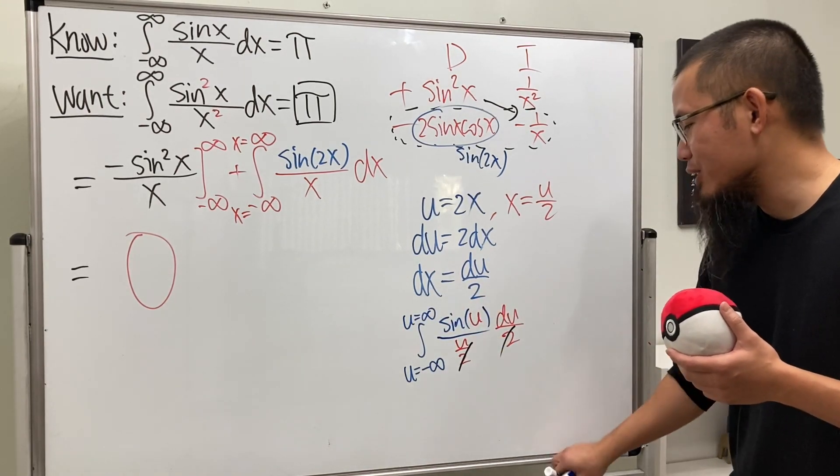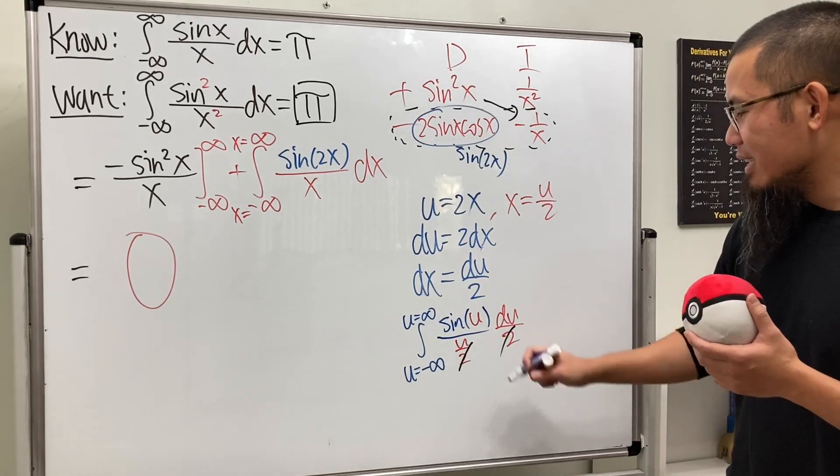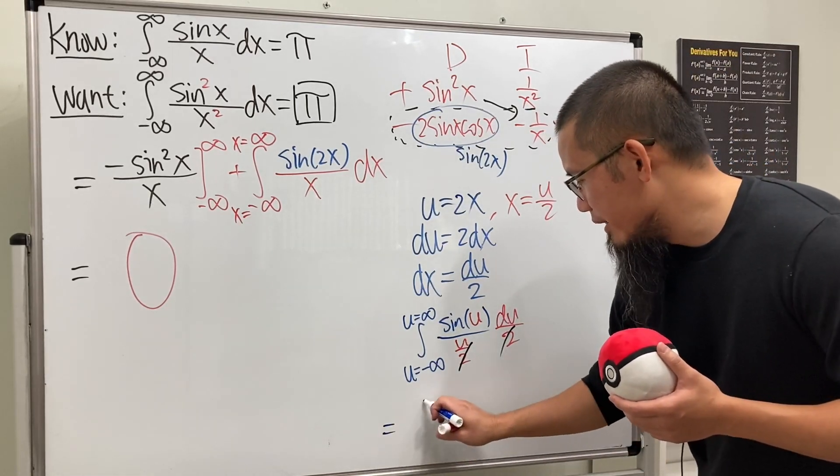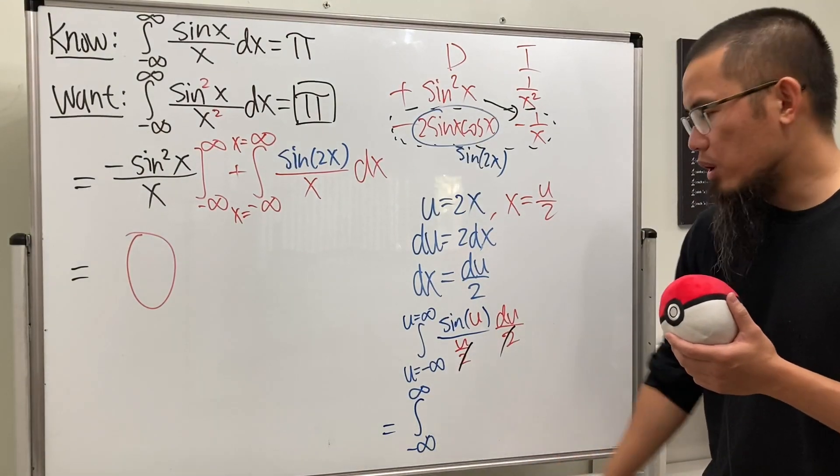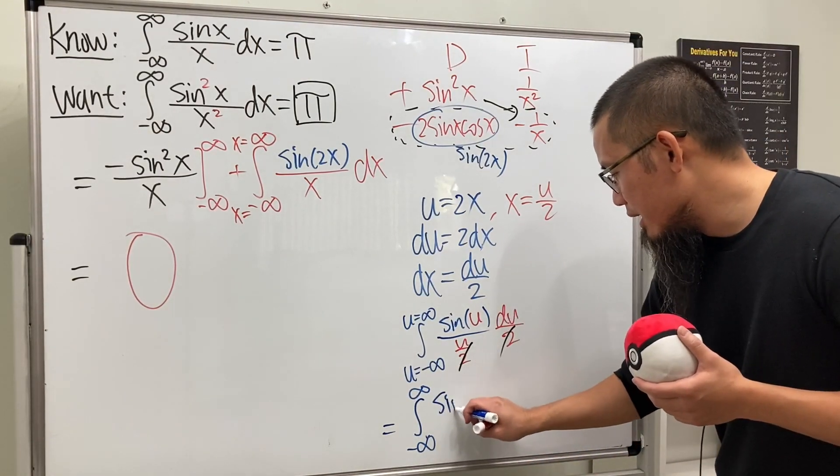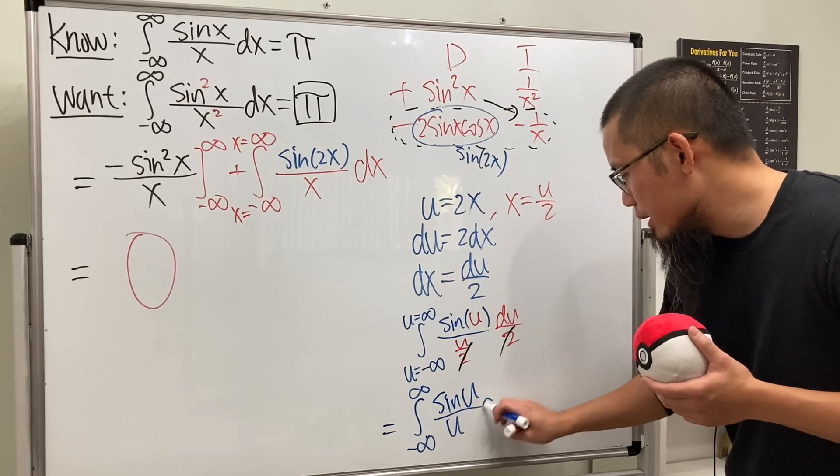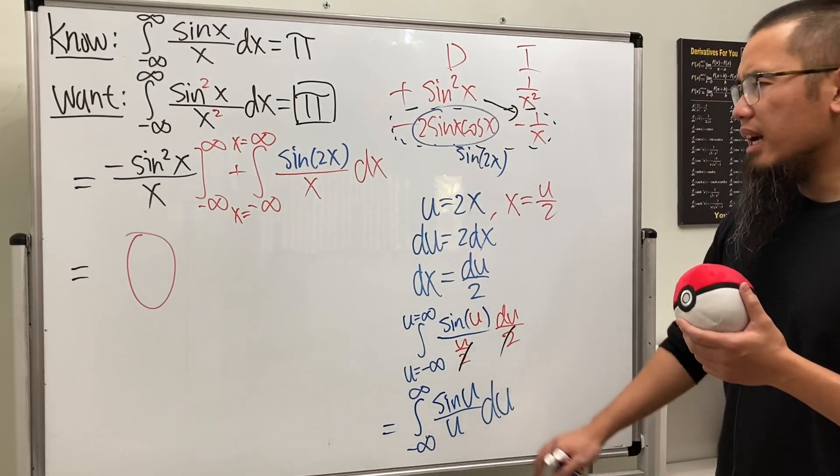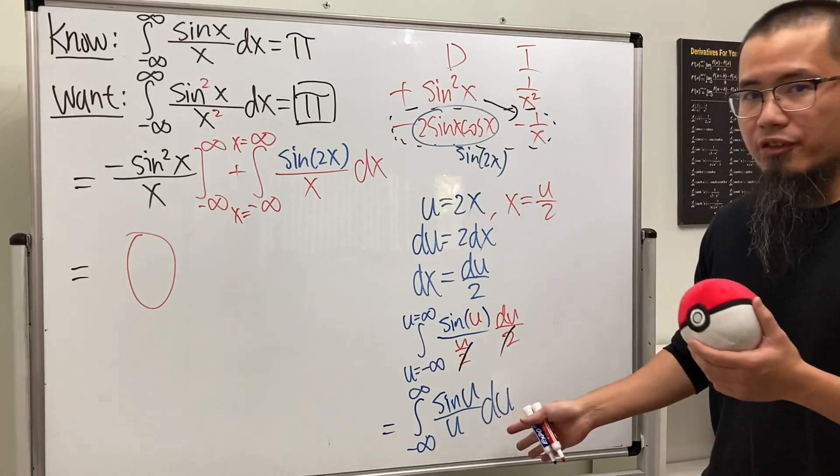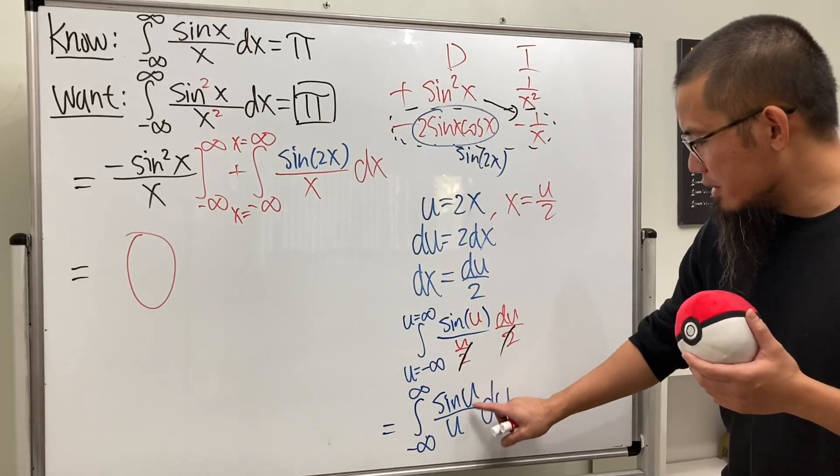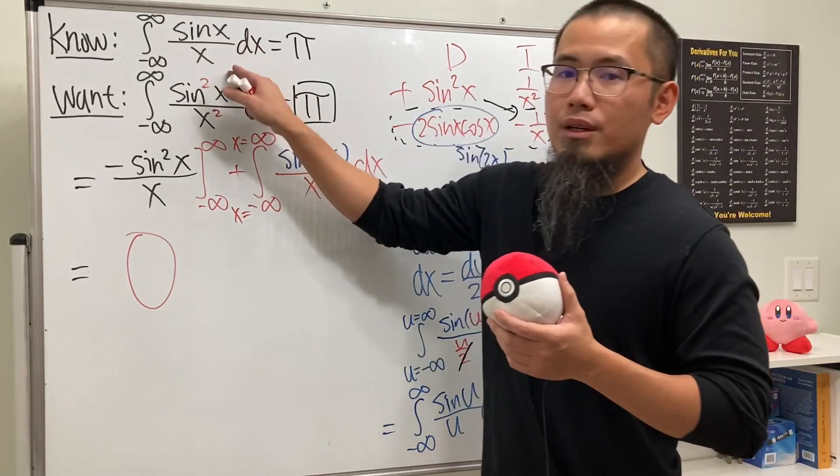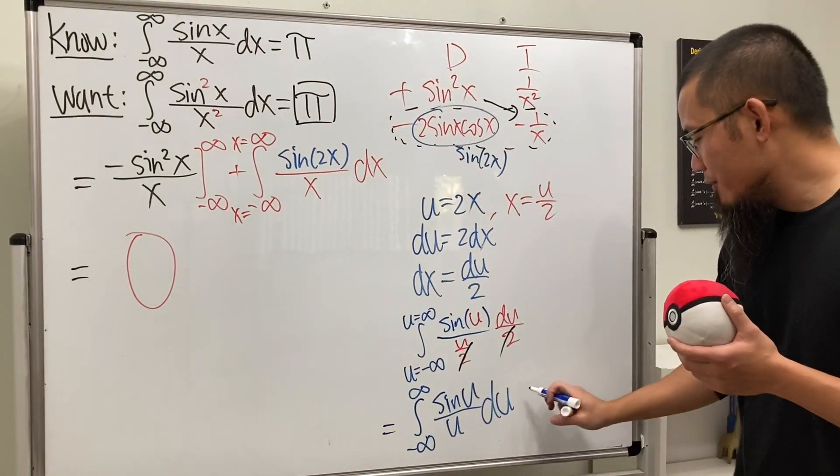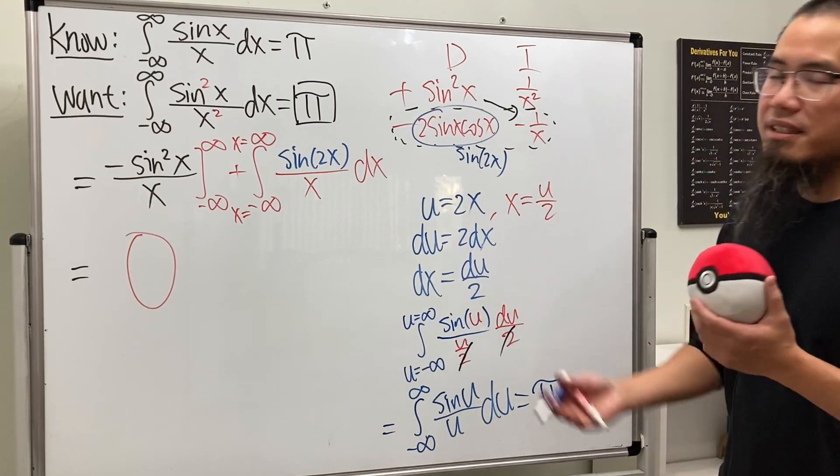Guess what, people. If you just look at the bottom, we have u over 2 right here and then multiply by 2, so this and that cancel. So in fact, this right here is just nicely equal to the integral going from negative infinity to positive infinity in the u world, and then we just have sine u over u du. And it doesn't matter if you are using u or t whatsoever, as long as you have this, this, and that match, it's just equal to π. So in fact, this is just equal to π, ladies and gentlemen.